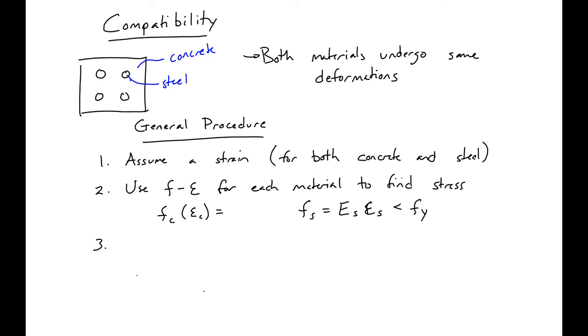Next, we'll use our area of concrete and our steel area to find the force in each material. We'll find PC equal to our area of concrete times our stress in the concrete, and our steel force equal to the area of our steel times the stress in our steel that we found above.